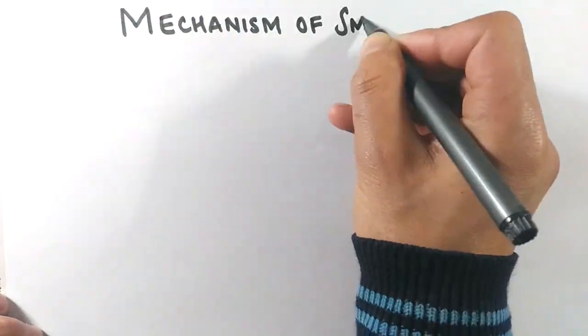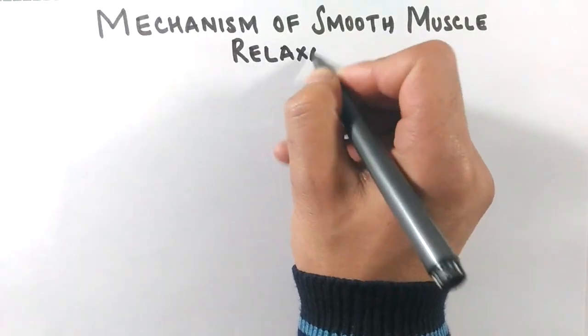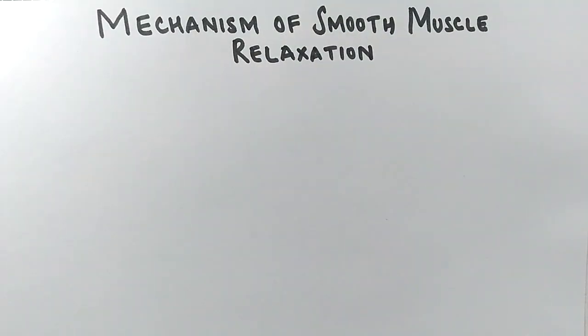Hello friends, in this video we'll be discussing the mechanism of smooth muscle relaxation - how these muscles create a mechanism to inhibit contraction or sometimes delay the contraction, thereby causing relaxation.